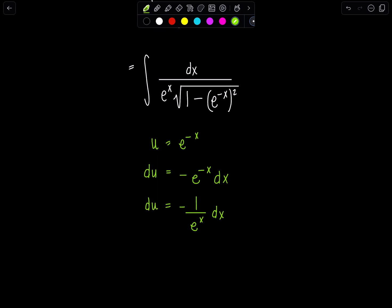And can you spot that in our integral? Yes, we have dx over e to the x right here. So I'm just going to move the negative over to the other side. And then we're pretty much ready to go and rewrite this integral all in terms of u. So let's do that right now.